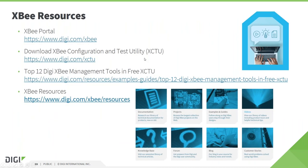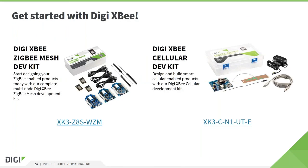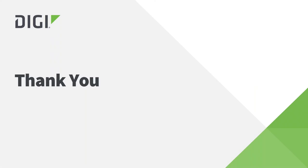Here are some links to topics we discussed in this presentation, including links to the XBee portal, our documentation, example projects, and other useful resources. To get started with an XBee product, we offer various development kits which come with modules, dev boards, antennas, and everything else required to get up and running in a few minutes. We listed the part numbers for the short-range XBee ZigBee mesh kit and the XBee Cellular dev kit as examples. Thank you very much for your attention and goodbye.